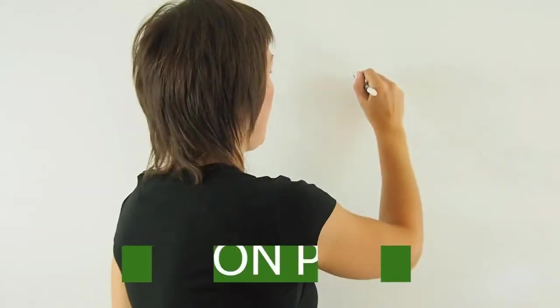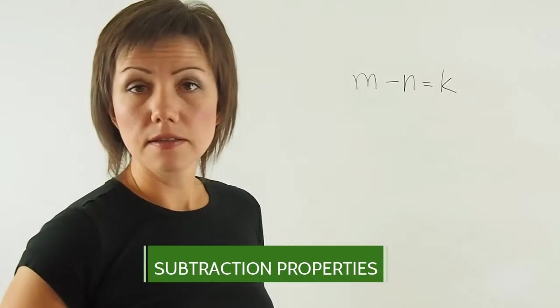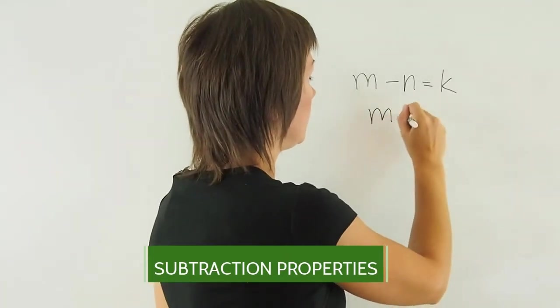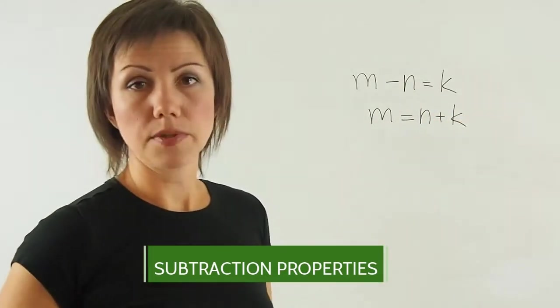Now let's look at subtraction properties. m subtract n is equal to k. Therefore, m equals n add k, n plus k. This is always true.